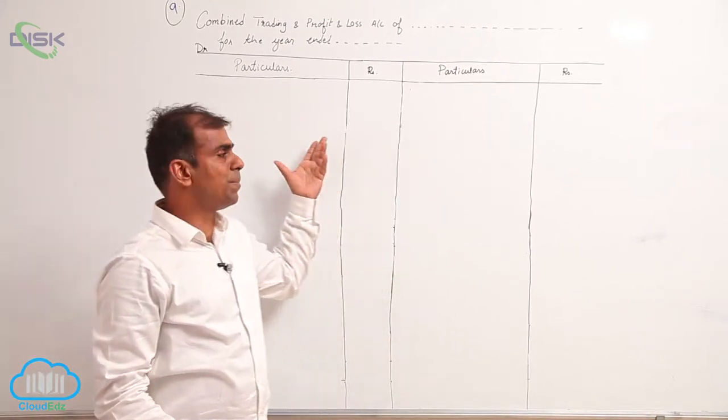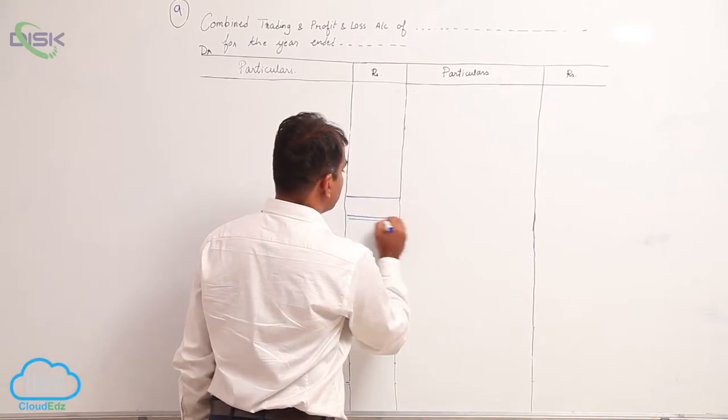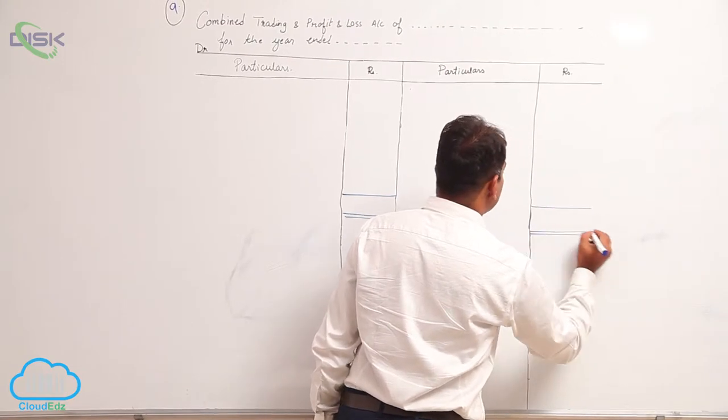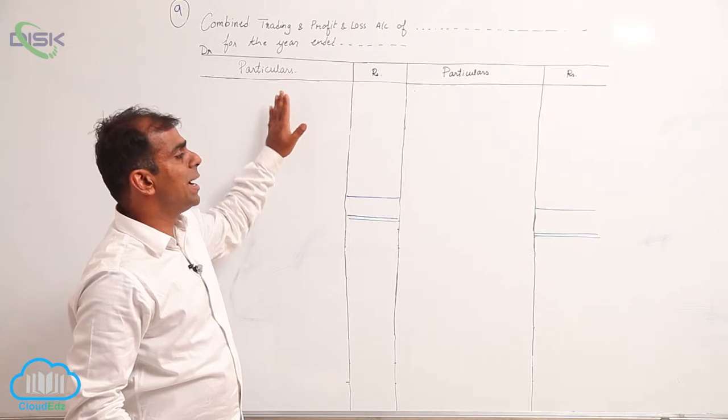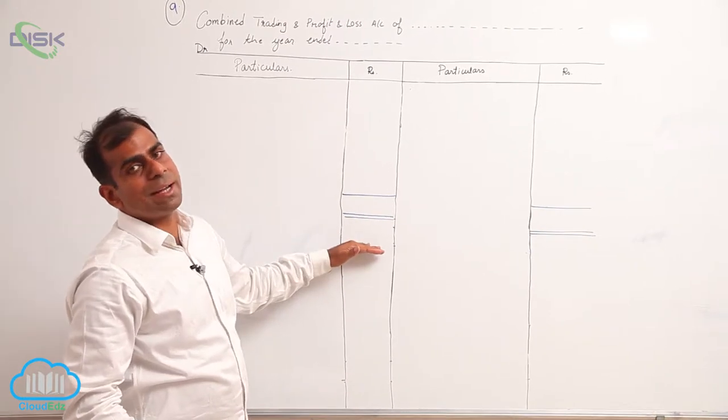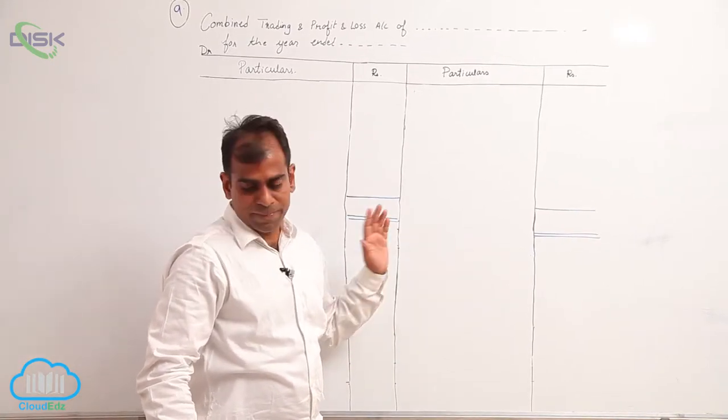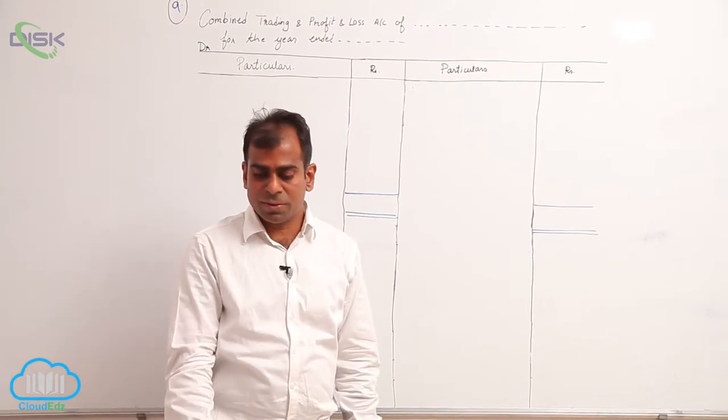I'll roughly show you here is my trading account ending, so whatever are the trading account items that we have not come across previously, I'll be writing in this part. Similarly, I'll be writing profit and loss account items below here. Now I'll just quickly run through the items which we have already come across in the previous problems.